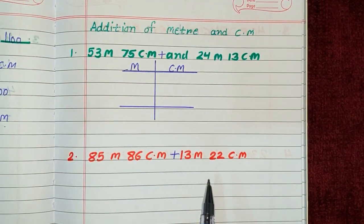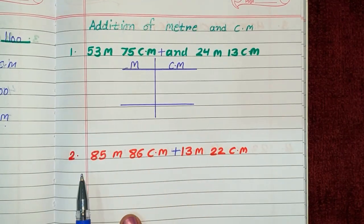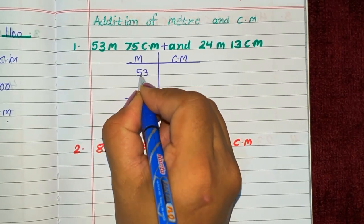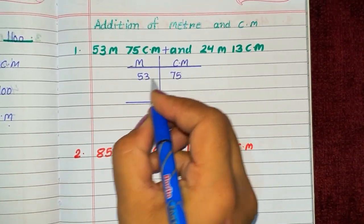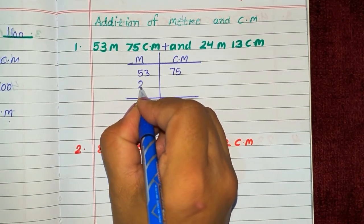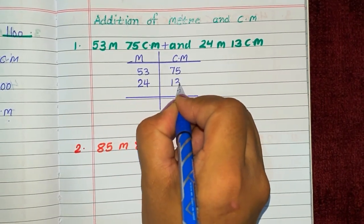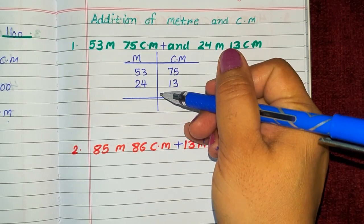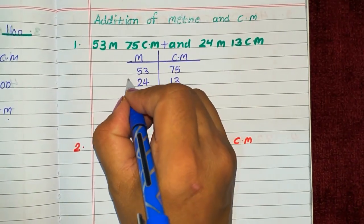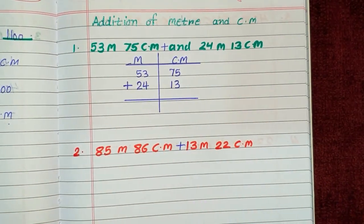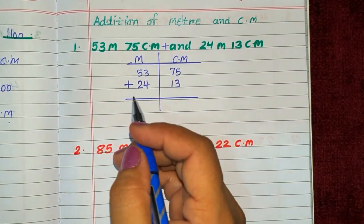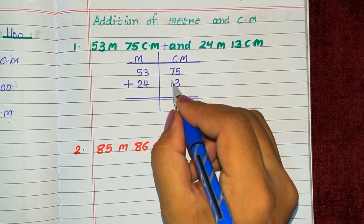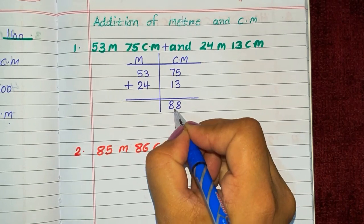You have to make a column of this type. Write the meter digits here: 53, and centimeter here: 75. Then 24 meter and 13 centimeter. Then add centimeter to centimeter and meter to meter. First we put the plus sign. We add centimeter to centimeter: 5 plus 3 is 8, and 7 plus 1 is 8.